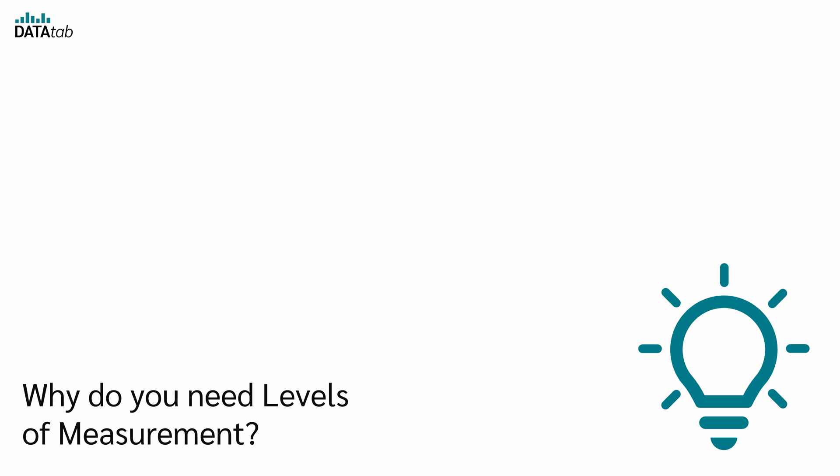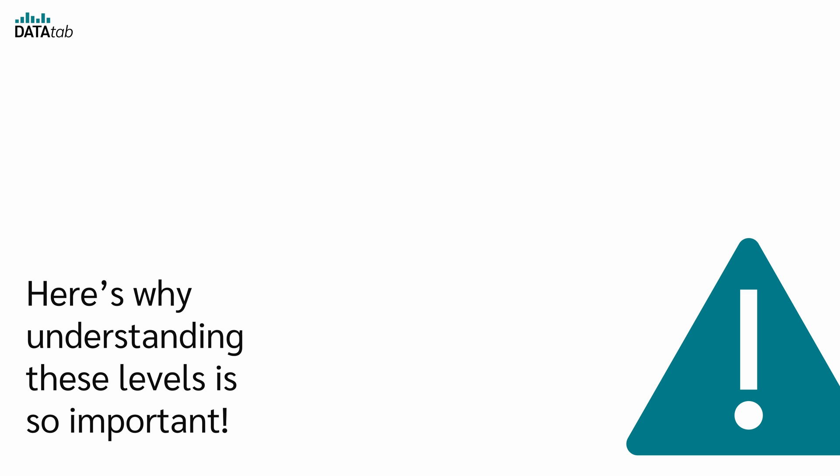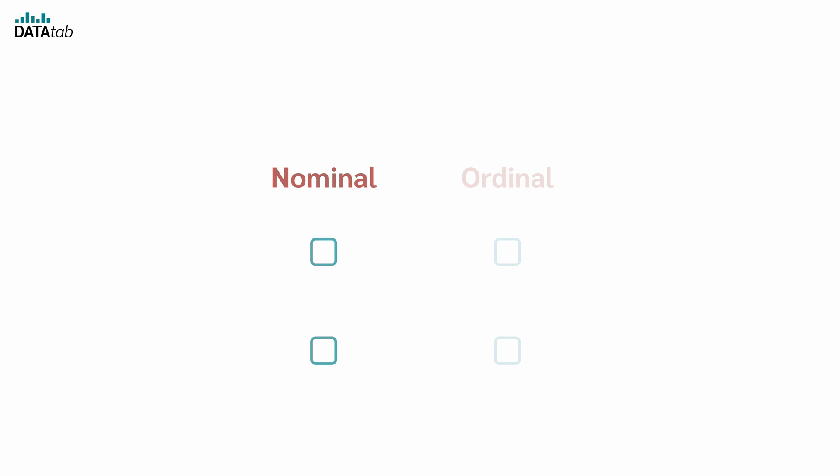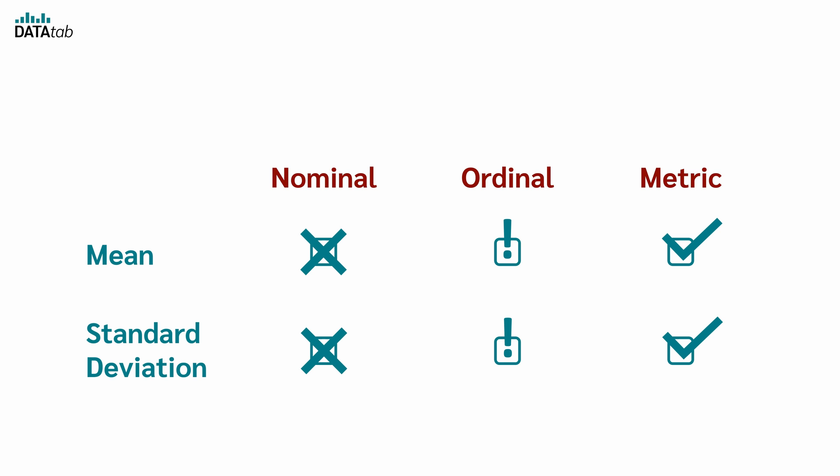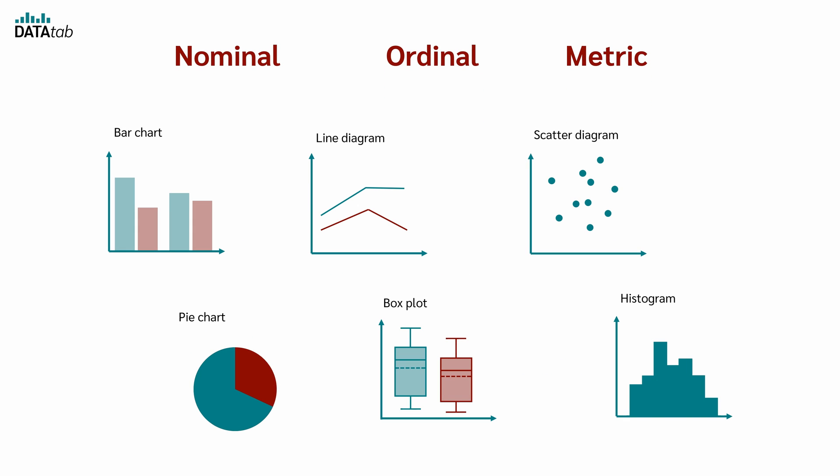Why do you need levels of measurement? The level of measurement is crucial in statistics for several key reasons. It tells us how our data can be collected, analyzed, and interpreted. Different levels of measurement support different statistical analysis. For instance, mean and standard deviation are suitable for metric data. In some cases, it may be suitable for Ordinal data, but only if you know how to interpret the results correctly. And it definitely makes no sense to calculate it for Nominal data.